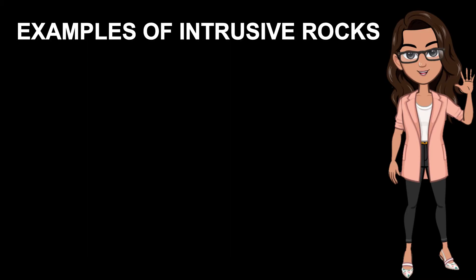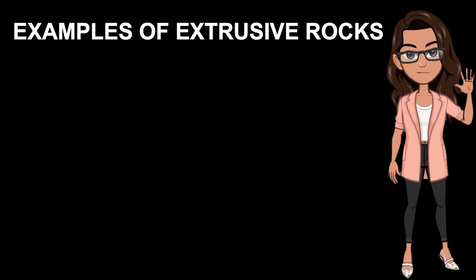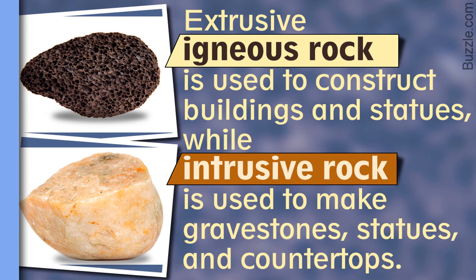These are some examples of intrusive Igneous Rocks. Extrusive Igneous Rocks are used to construct buildings, while intrusive rocks are used to make gravestones, stoves, and countertops.